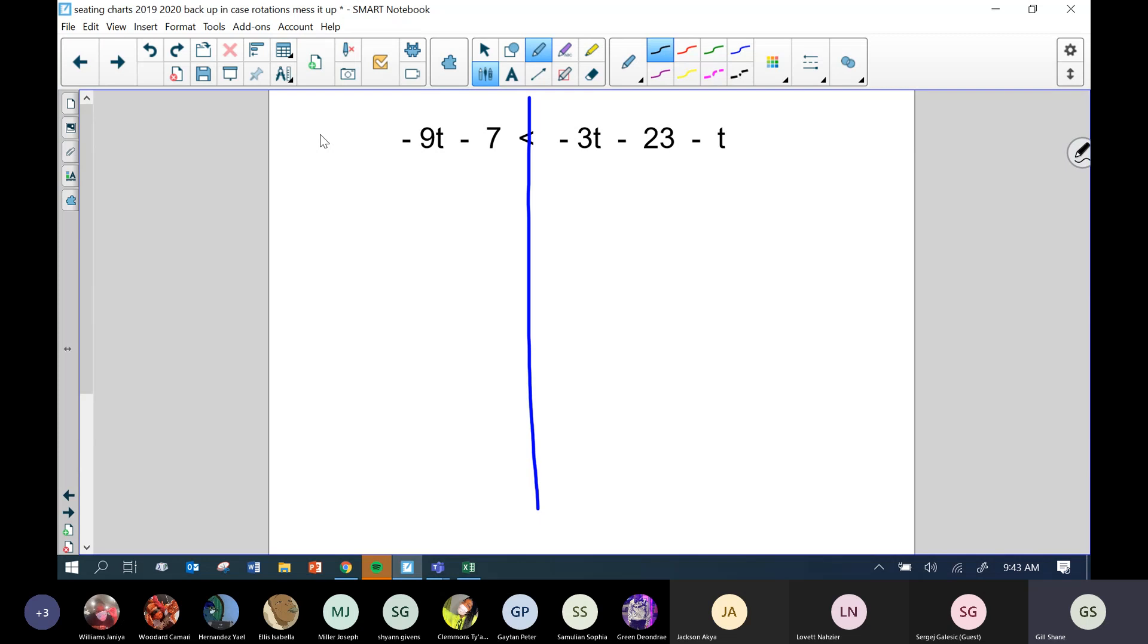So when I'm solving, first of all, step one is do the distributive property. Well, there's no parentheses, so I don't have the distributive property. So I completely ignore step one or I skip step one. There's no parentheses, can't be a distributive property.